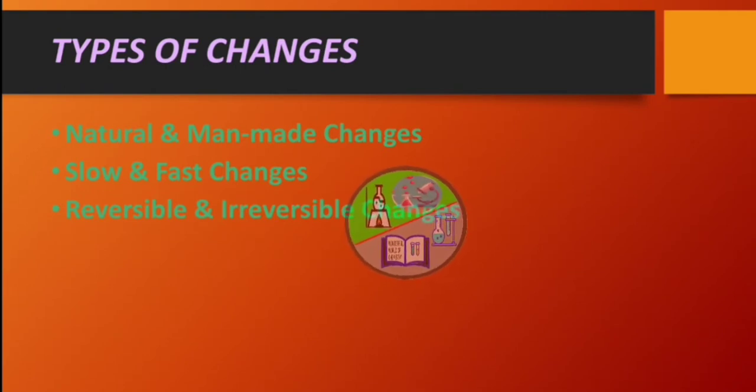The next type of change is reversible and irreversible changes. Reversible change is a change that can be reversed back. For example: melting of ice, drying of clothes, etc.